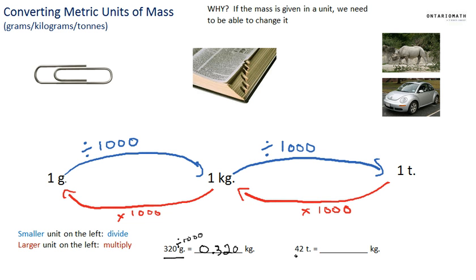Now, I'm given the mass of an object that is 42 tons. How many kilograms is it? We're going from tons to kilograms, so we multiply by 1,000 — tons is the larger unit on the left. So 42 times 1,000 is 42,000 kilograms. And that's the idea of converting metric units of mass.